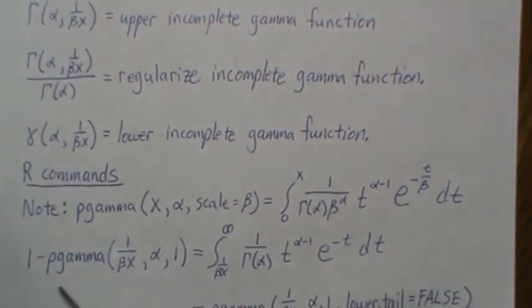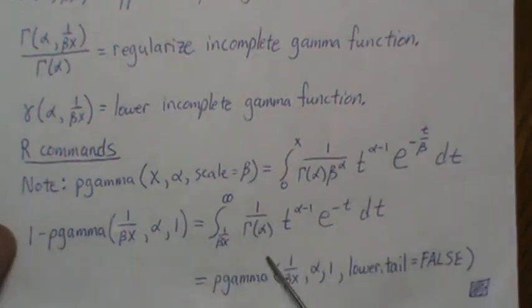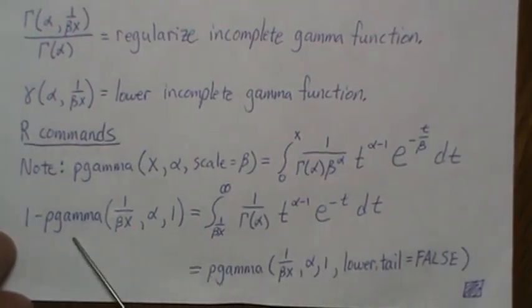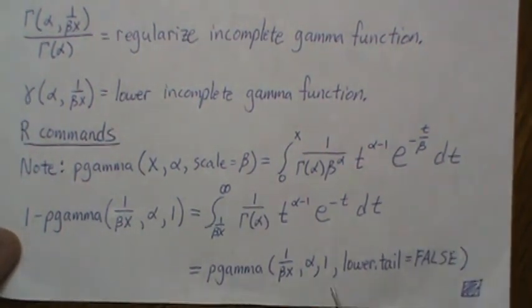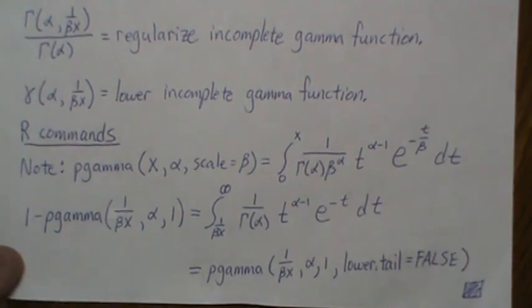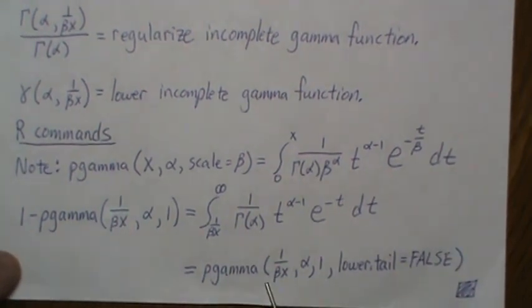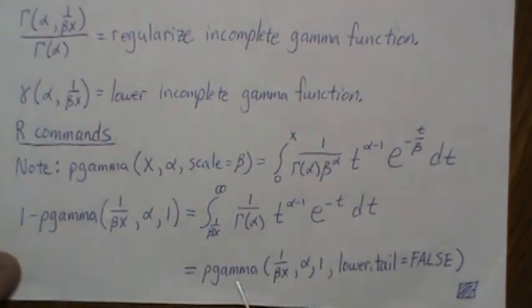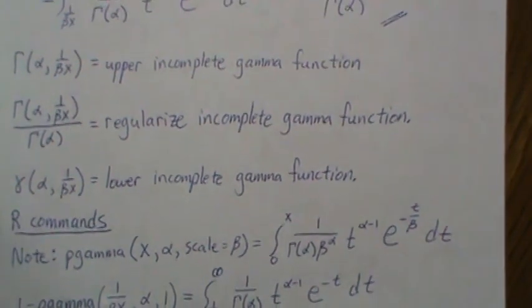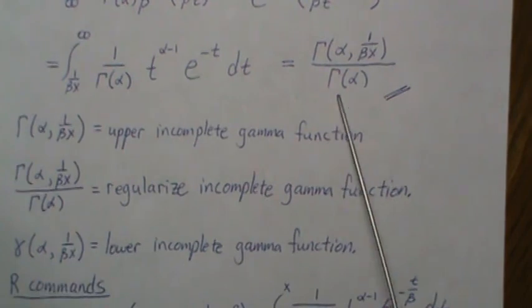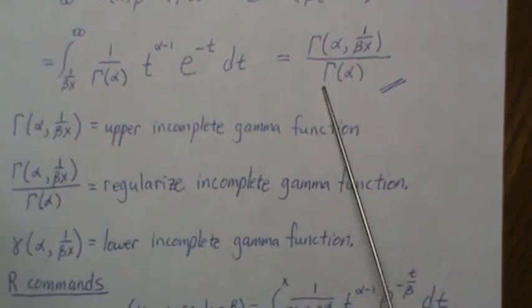And that's the R command to calculate this. We could also use the same command, P gamma, but we say lower tell equal false, which then it means it integrates the upper tail, which this is equivalent to one minus that. And this piece here is exactly this regularized incomplete gamma function.